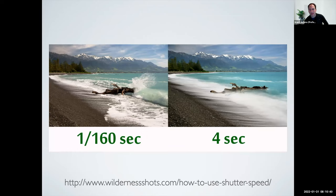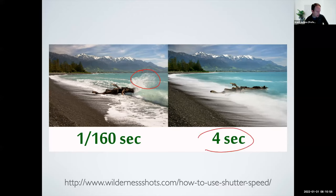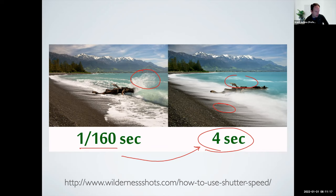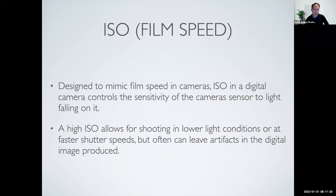Here's a dramatic side-by-side example. At one one-hundred-and-sixtieth of a second, you see all the individual spray drops when a wave hits a tree on the beach. If we change the exposure all the way to four seconds — a really big jump — everything is smoothed out. We're not seeing any foam in the water, no spray coming off the tree, and the waves have all smoothed out too. It's really changing what the image looks like based purely on the variety of time the exposure is allowed to hit the photosensitive material.